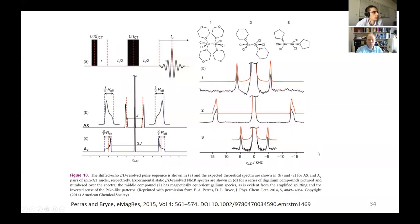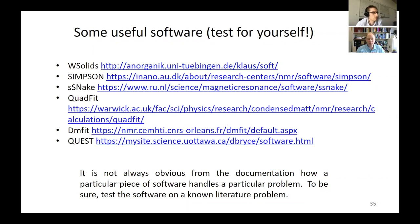Some useful software — the most important thing is to test it on an example from the literature or against software that you know works. I'm sorry if I left out someone's favorite software; obviously there's a lot for analyzing multi-dimensional spectra. It's not always obvious from the documentation whether how the software treats a particular problem — what's in the code — so it's best to test on a known literature problem to see if you get the expected result.